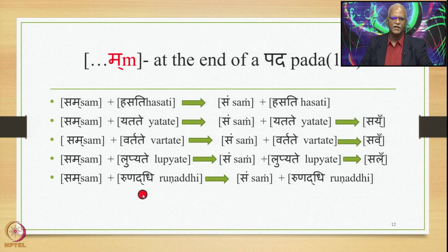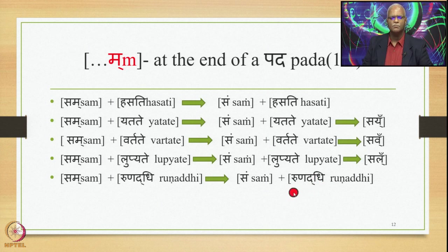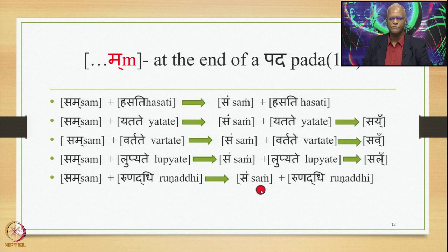Sam plus Ranadhi: R is a Hal, so 8.3.23 applies and substitutes Ma by Anuswara, giving Sam Ranadhi. Since R does not have a nasal variety, there is no further Parasavarana substitution. You do not substitute this Anuswara by anything because R lacks a nasal variety.